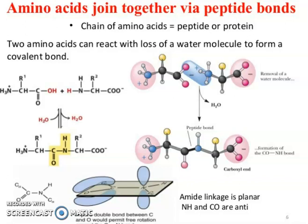The pure double bond between carbon and oxygen would permit free rotation, but the amino linkage is planar. N-H and C-O are anti-parallel. You can see the amide linkage C-O-N-H. The C-O is perpendicular in orientation. This is the beauty of the presentation of the amide linkage.